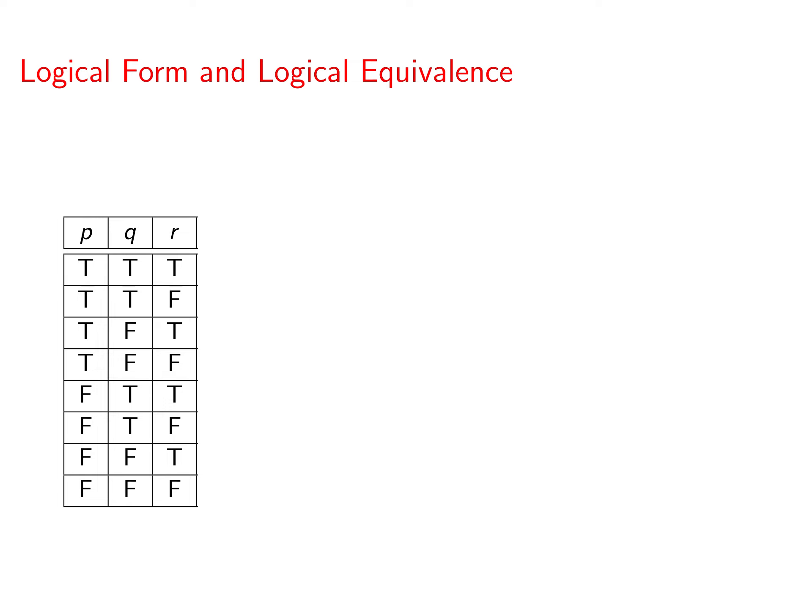Okay, here's how you're going to start your truth table. Remember that there are three input variables, p, q, and r. That means there have to be eight different possibilities for input values for p, q, and r. p has two choices, q has two choices, r has two choices.